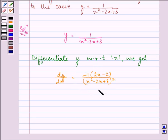That is, on using the quotient rule, on simplifying it further we have (2 - 2x)/(x² - 2x + 3)² as our dy/dx.